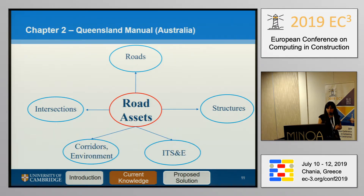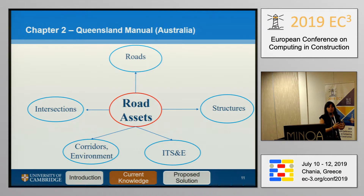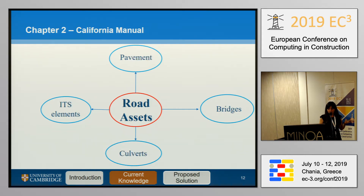For Australia, there's a similar structure to the UK — roads and structures — but with a separate category for intersections, a different category for environment and corridors, and a new category for ITS elements, meaning intelligent transport system elements like loop detectors. The California manual also includes ITS elements in the road assets category, with pavement, culverts in another category, and bridges in a separate one.